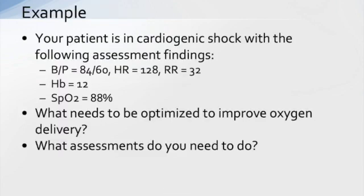Let's put it all together with an example. Your patient is in cardiogenic shock with the following findings: blood pressure 84/60, heart rate 128, respiratory rate 32, hemoglobin 12, and SpO2 88%. This is the kind of information you might get in a scenario question on the CCRN exam. What needs to be optimized to improve oxygen delivery, and what assessments do you need to do? Pause the video, think about those two questions, and we'll talk again in a few moments.